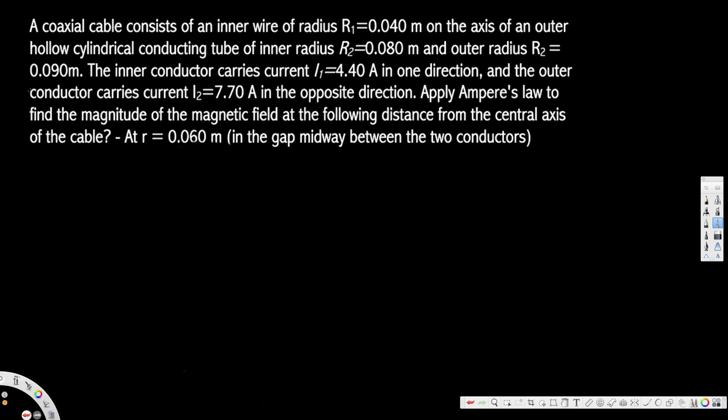Let's look at this problem. The question asks about a coaxial cable consisting of an inner wire of radius r₁ = 0.04 m on the axis of an outer hollow cylindrical conducting tube of inner radius r₂ = 0.08 m and outer radius r₃ = 0.09 m.